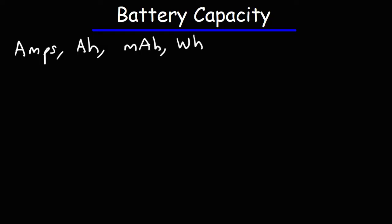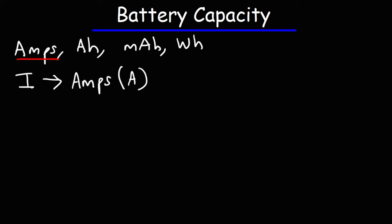Let's start with amps. Amps is the unit of current, which is represented by the symbol I. You can just write A to represent amps.